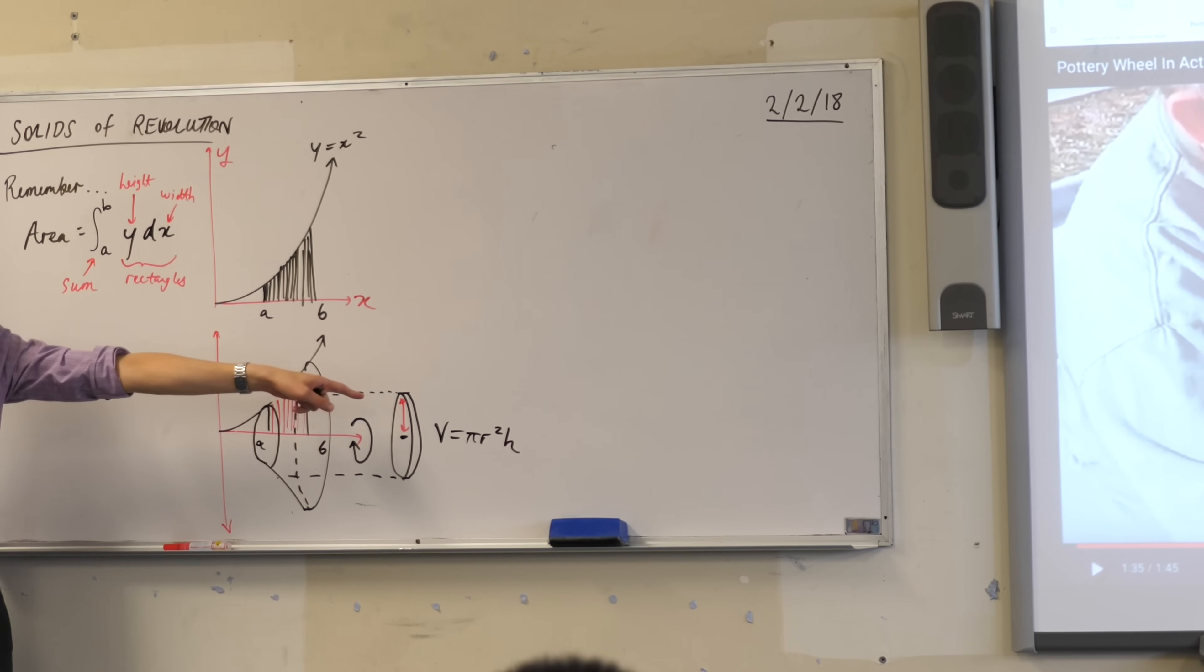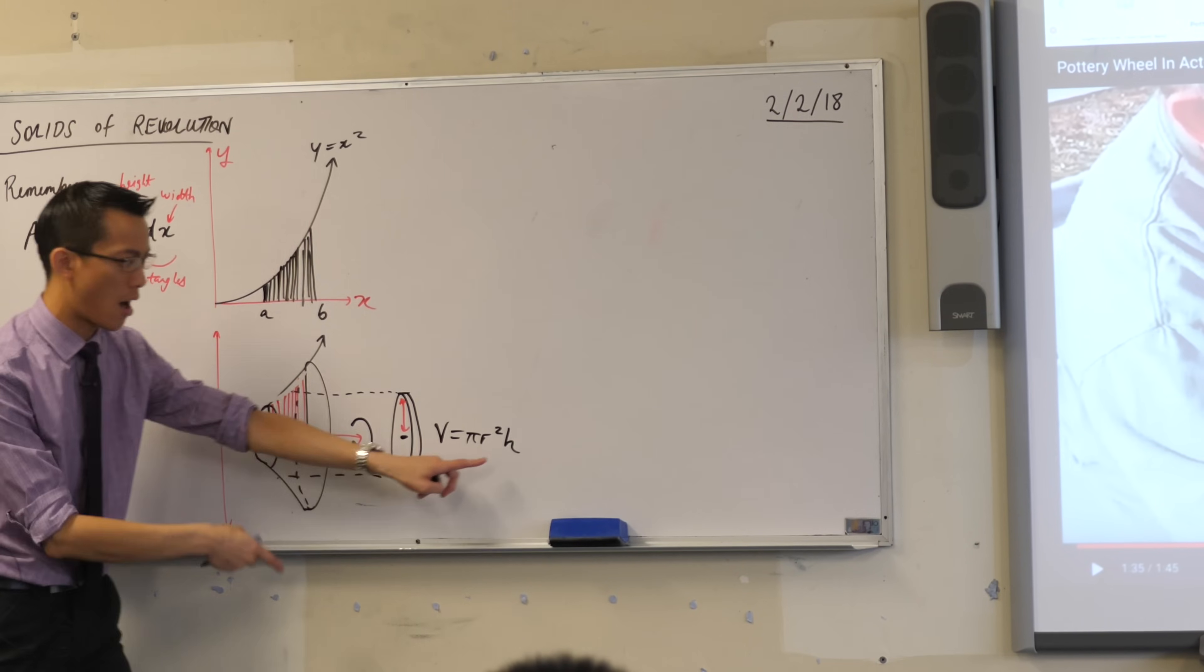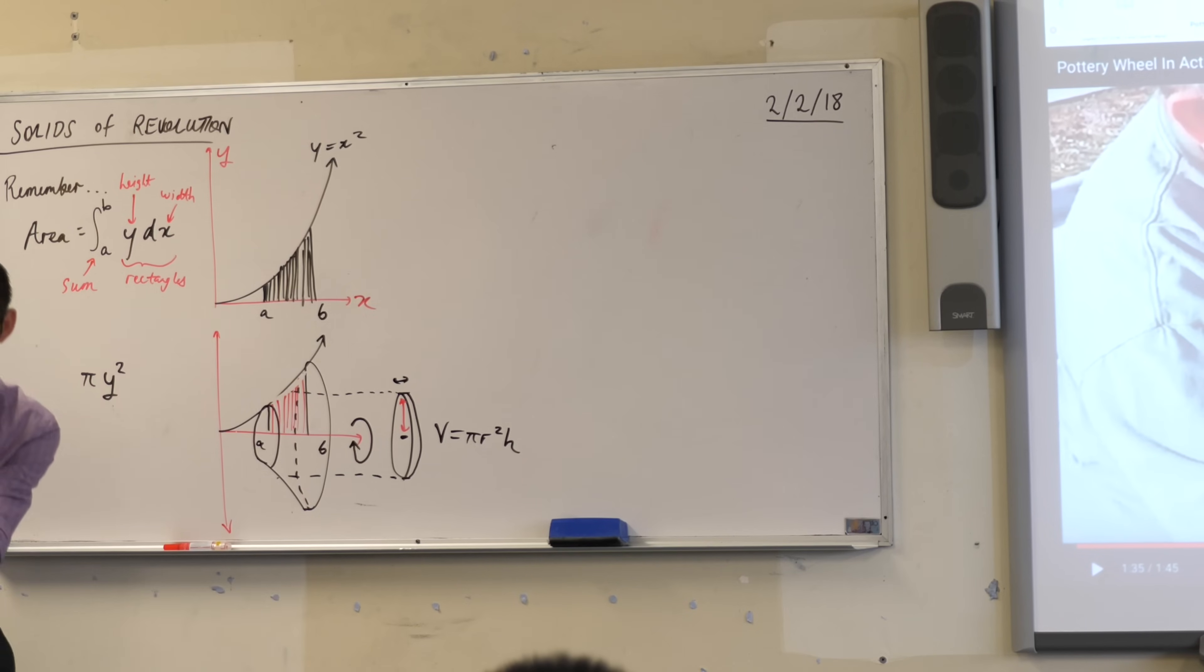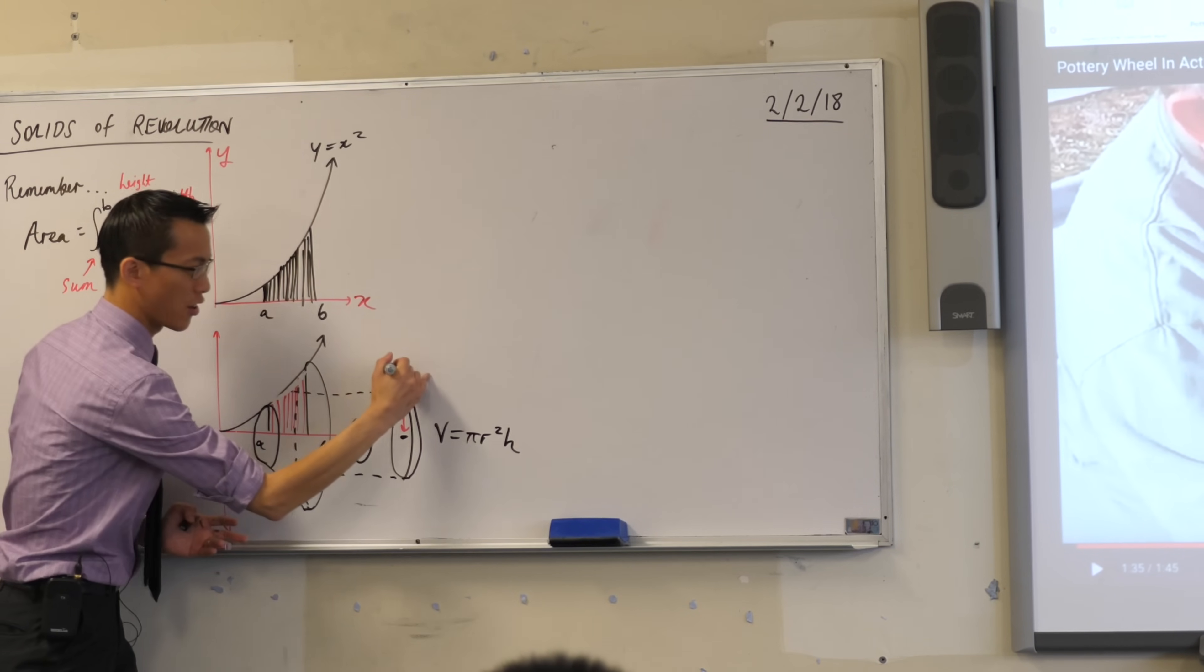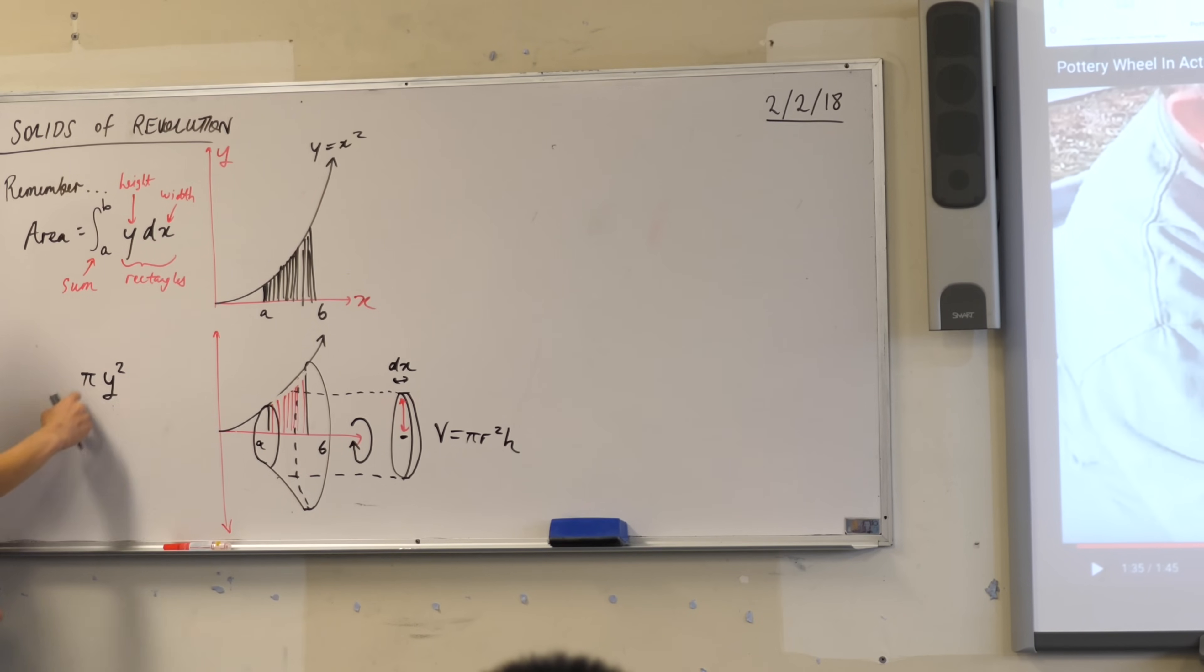Now what do we do to the radius in the formula? We square it. Pi r squared, where in this case the radius is that. Now what about the width, or I should say the height of this cylinder? This is this infinitesimally thin width, just like I had an infinitesimally thin width here. It's a width though, it goes horizontally, doesn't it? So I go pi r squared, in this case my h is that.